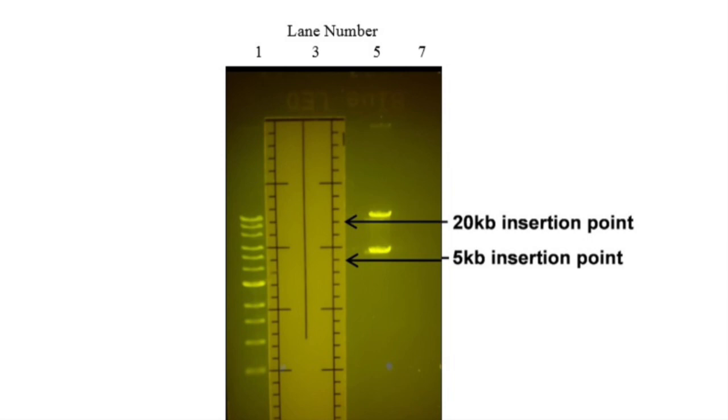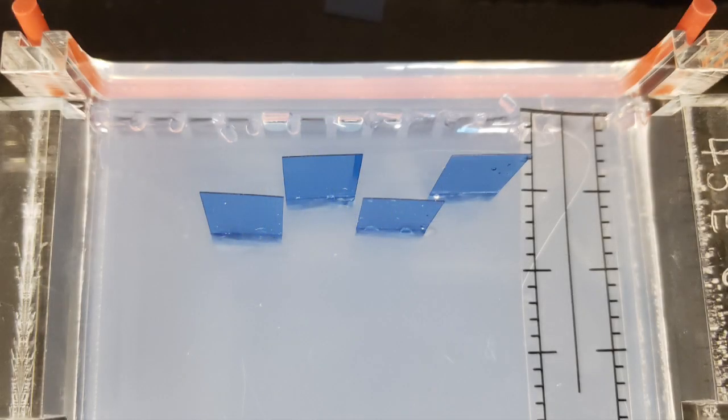Visualize the gel under blue LED light and use the DNA migration gauge to help locate your DNA bands of choice. Place DNA locator tabs in front of your DNA bands of choice.